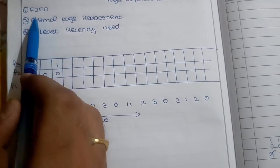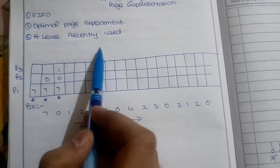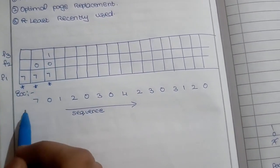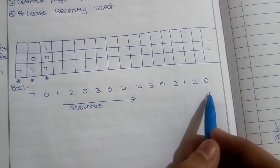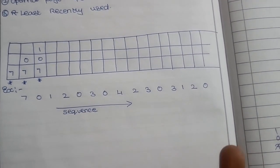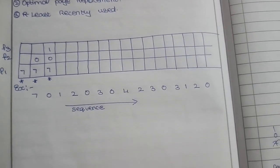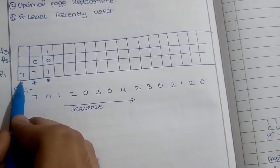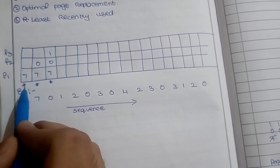Page replacement has three methods: FIFO, optimal page replacement, and least recently used. FIFO is first-in-first-out. If you guys have learned data structures, FIFO works like a queue.